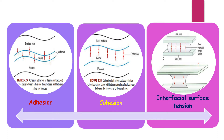The first physical factor is adhesion — the attraction of dissimilar molecules, which includes the attraction between saliva and the denture base, as well as saliva and the mucosa. Next is cohesion — the attraction between similar molecules, which takes place within the molecules of saliva present between the mucosa and the denture base. Cohesion is the attraction between similar molecules within the saliva itself.